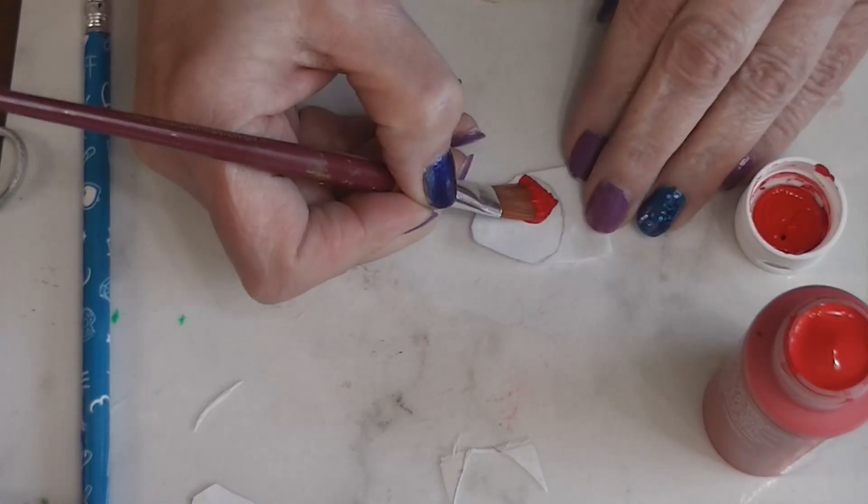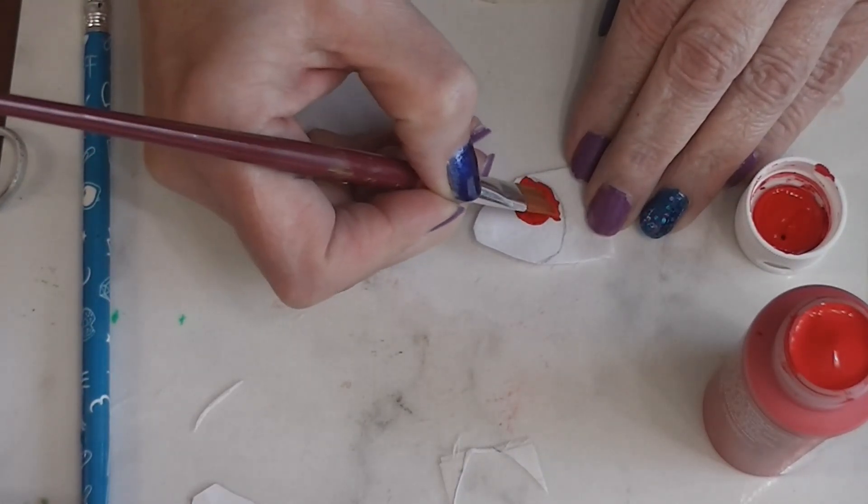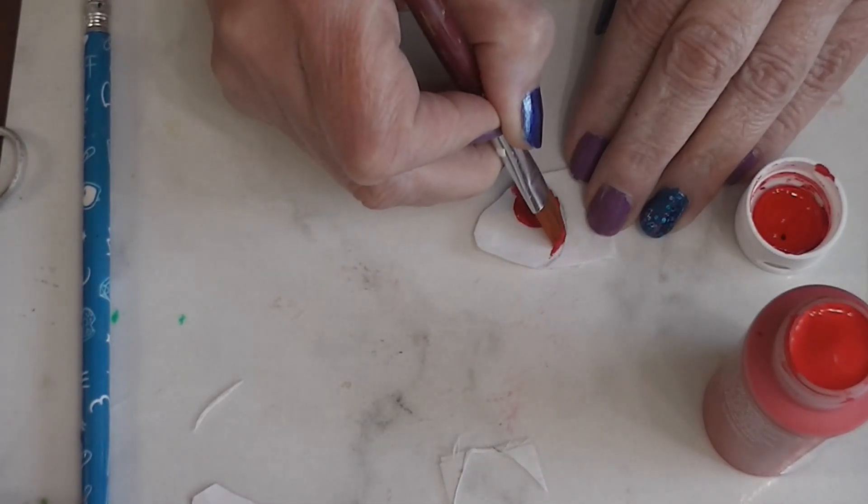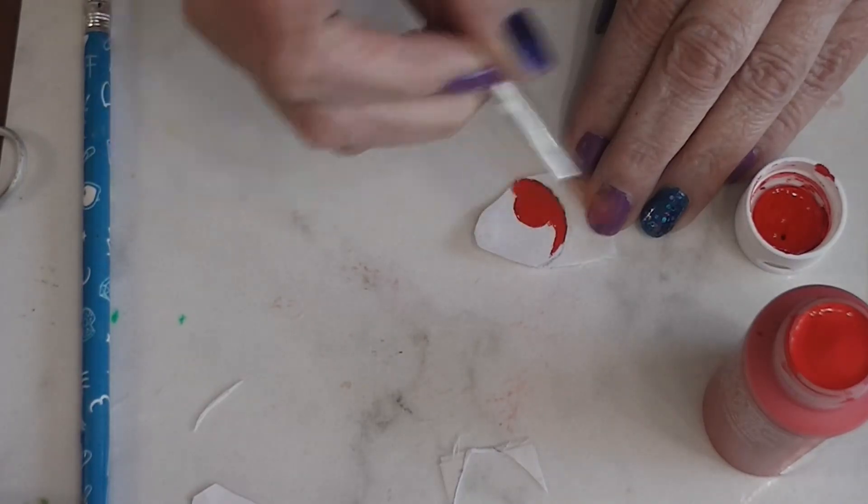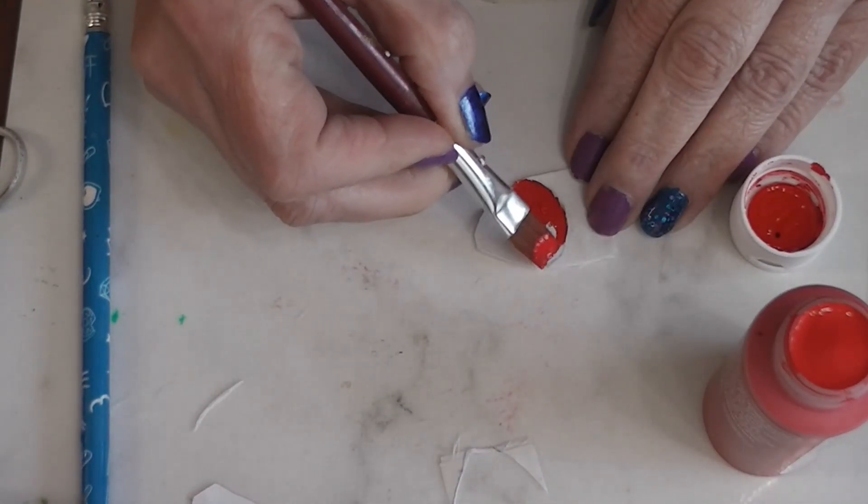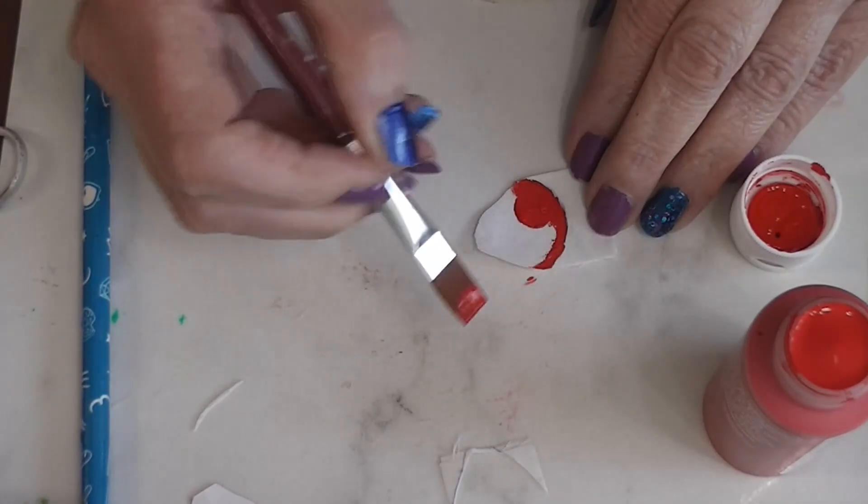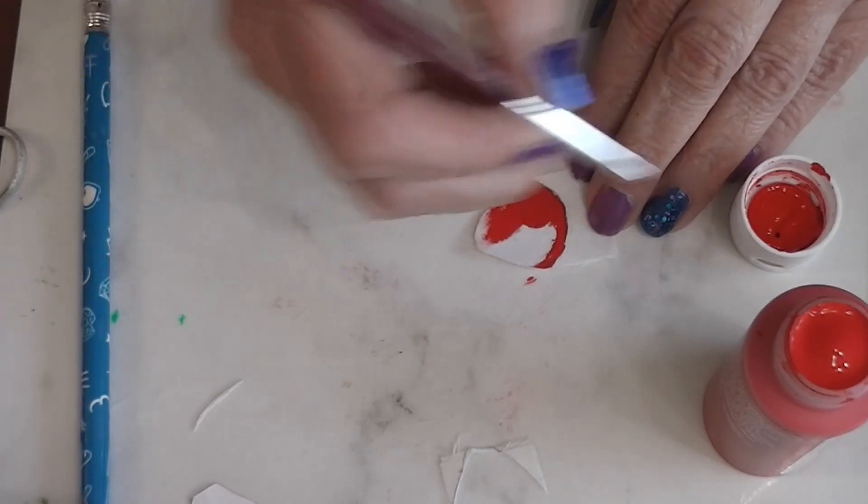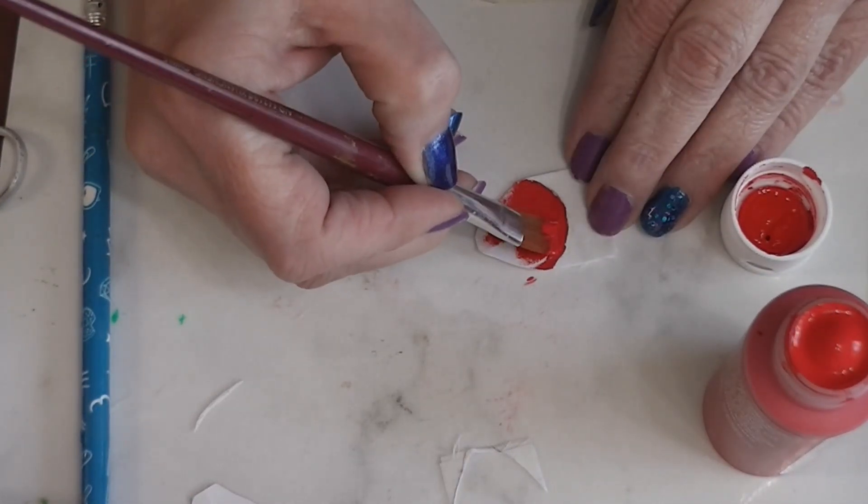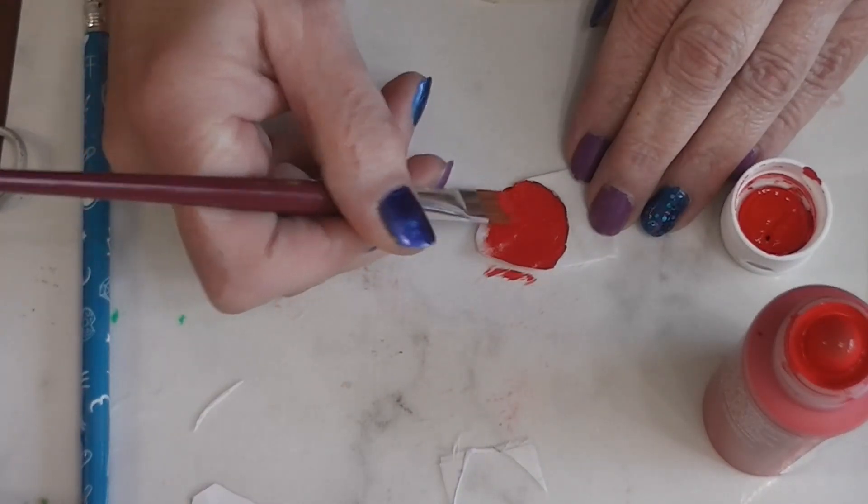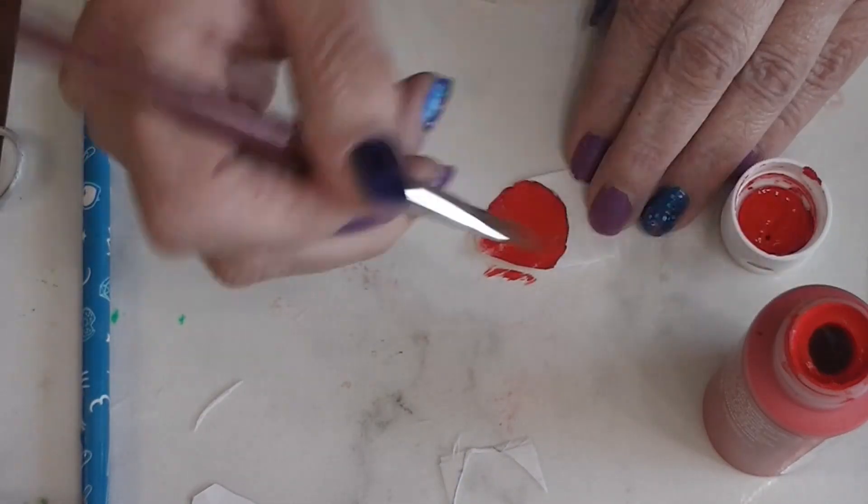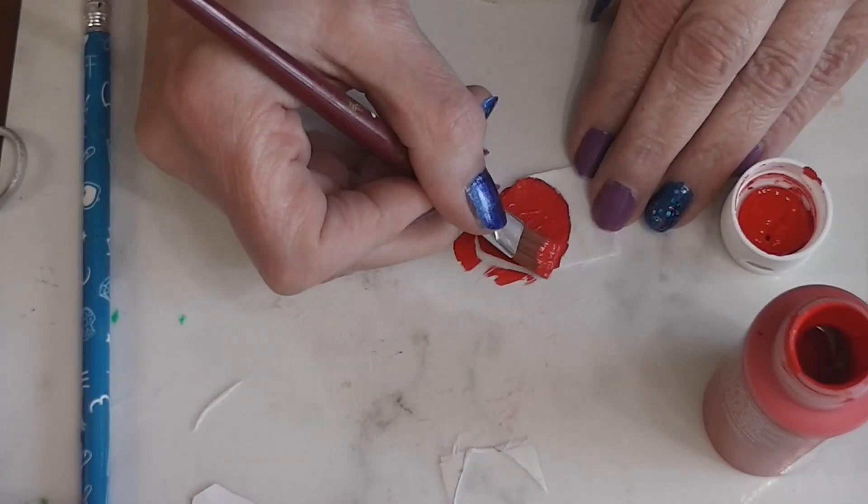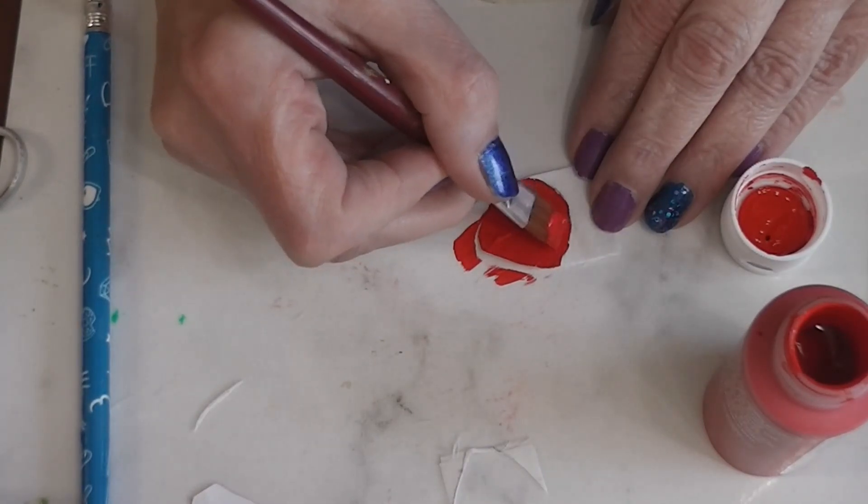Using that line as a guide. Probably should have picked out a slightly smaller brush, but this is okay. Since there's nothing that can get on my brush, I'm just using the paint straight out of the lid. I'm not concerned about anything getting on my brush from this.